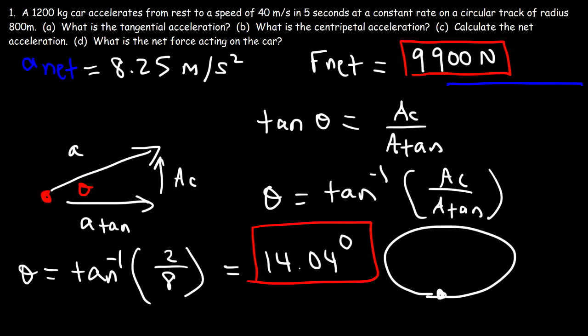In uniform circular motion we only have a centripetal acceleration due to the change in direction. But in non-uniform circular motion we have centripetal acceleration from the change in direction and also a tangential acceleration from the change in the magnitude of velocity — the speed. That's the key distinction, and that's it for this video. Thanks for watching and have a good day.